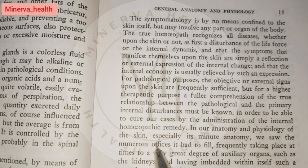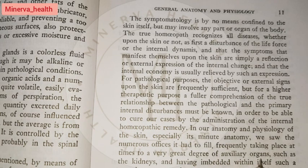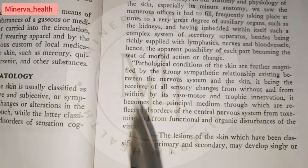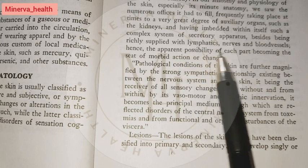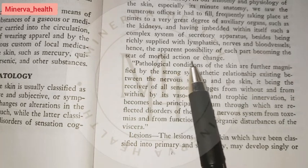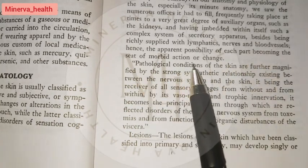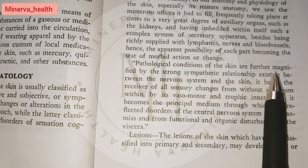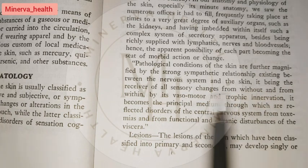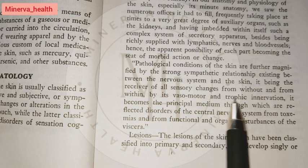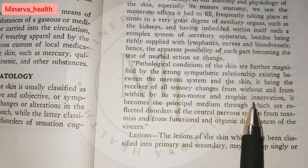In the anatomy and physiology of the skin, especially its minute anatomy, we see the numerous orifices it has, frequently serving as auxiliary organs such as the kidneys, and having embedded within itself a complex system of secretory apparatus, besides being richly supplied with lymphatics, nerves, and blood vessels. Hence the apparent possibility of each part becoming the seat of morbid action. Pathological conditions of the skin are further magnified by the strong sympathetic relationship between the nervous system and the skin, it being the receiver of all sensory changes from without and from within, by its vasomotor and tropic innervation.